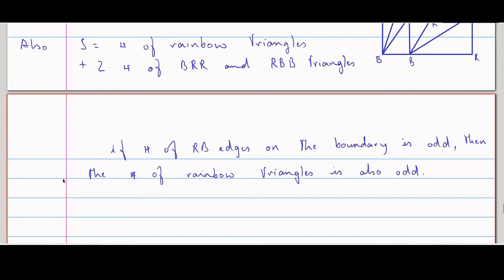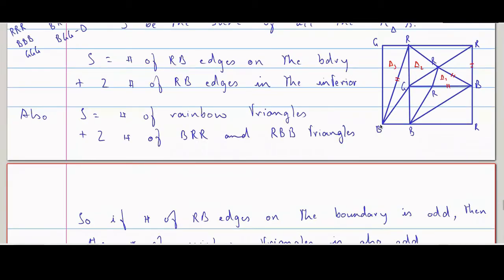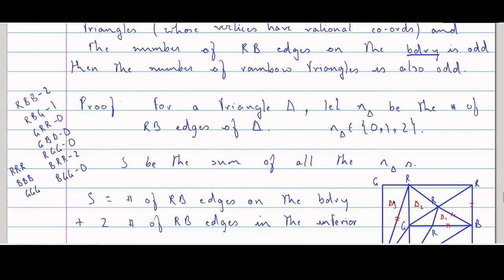That's the proof of Sperner's Lemma. And because it is odd, that means it has to be at least one. So for any such polygonal region, you just look at the boundary, count the number of red-blue edges. If it is odd, then you know at least one rainbow triangle has to be there. That is Sperner's Lemma.